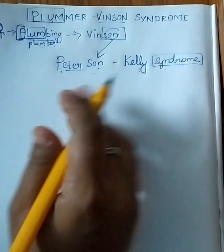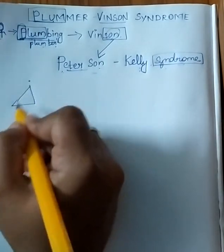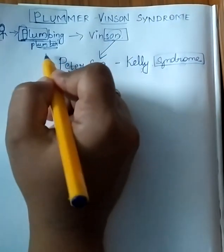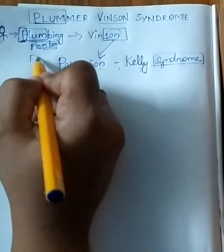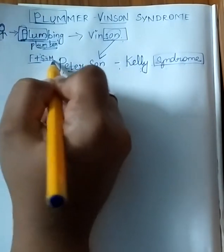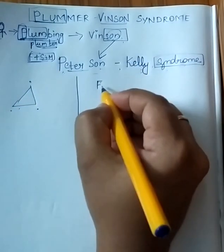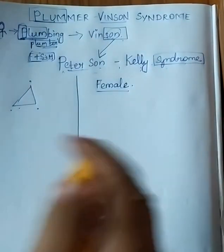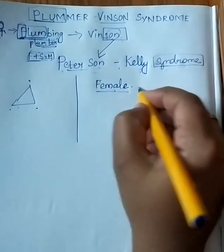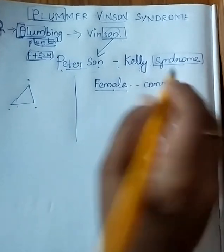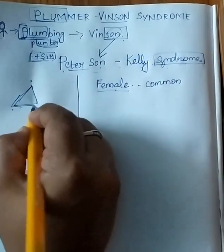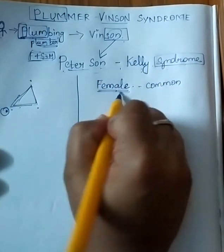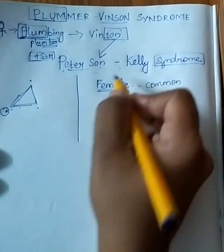As you all know, syndrome means there would be a classic triad of symptoms, and in this condition also there is a classic triad. Now, the plumber had a son, so there is a father plus son — meaning there must be a mother too. The mother would obviously be female, and this means this syndrome is more common among females than males.